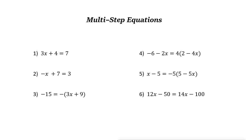Multi-step equations. To solve multi-step equations, combine like terms on one side. You also need to bring variables to one side by adding and subtracting. Then simplify more by using the inverse of multiplication or division. At the end of the process, check your answer by plugging the value of the variable into the original equation.